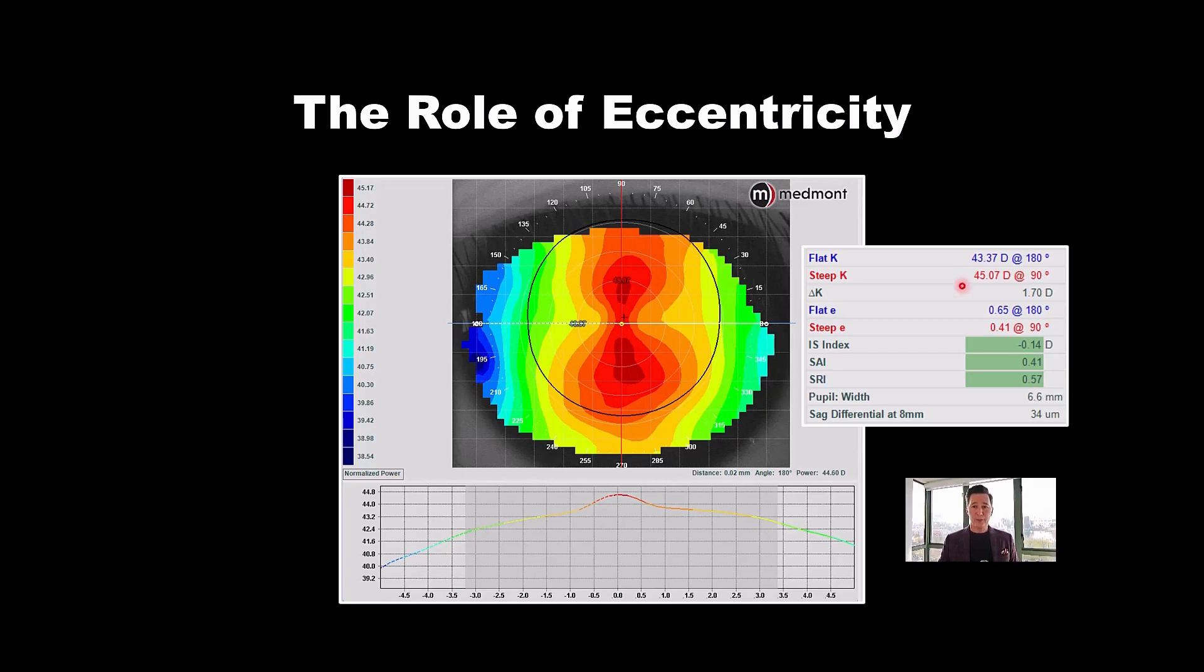Now here we have a patient 43-37, fairly median in radius, eccentricity 0.65. That's pretty normal for a Medmont topography. So how do you use those together to understand the candidacy of a patient? And essentially, if you have a low minus patient, it really doesn't matter what the radius of the eye is, or the eccentricity, you're probably going to be able to squeeze out a minus one or minus 150 effect without too much trouble.